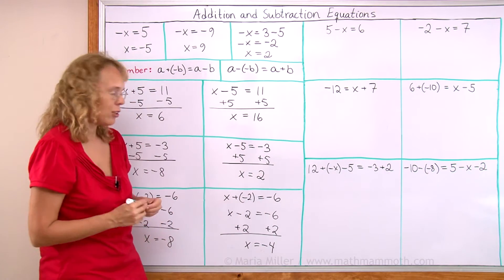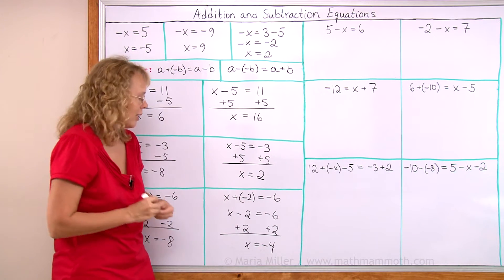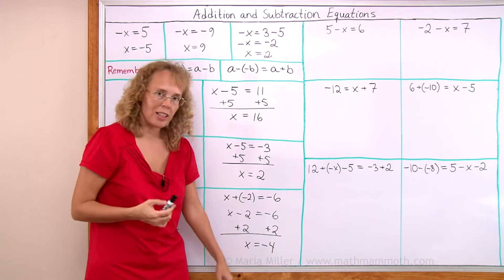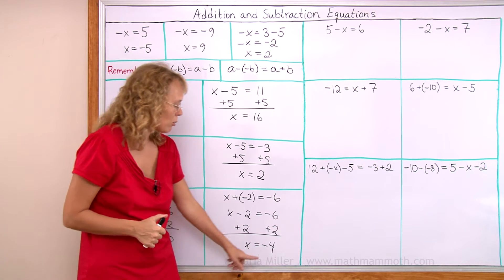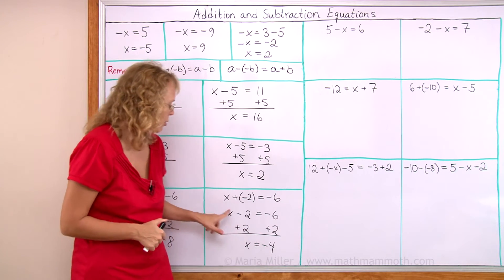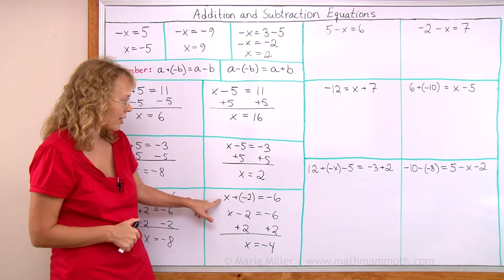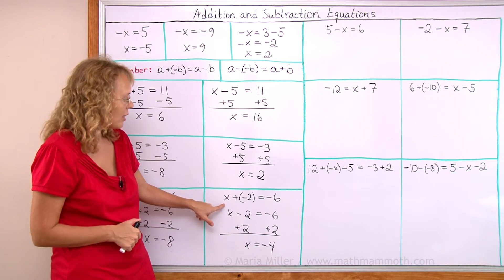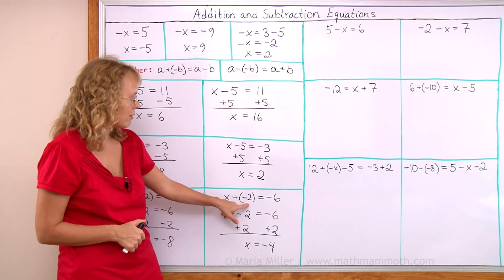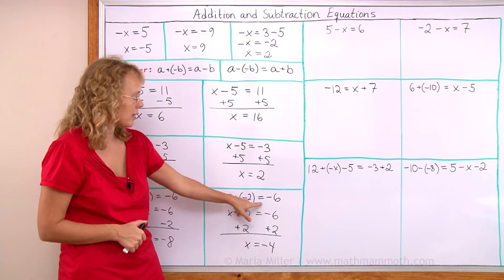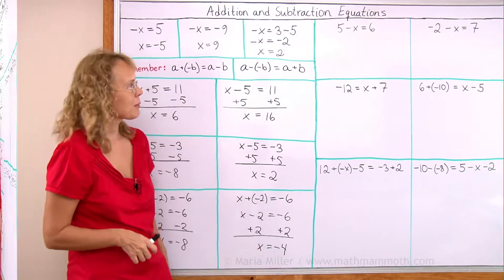You want to check each solution when you're really solving this. Plug negative 4 in for x: negative 4 plus negative 2 — yes, it is negative 6. It checks.